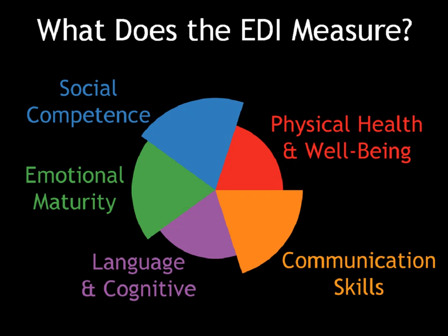What does the EDI measure? It has 103 items on it, formed as a kind of extended report card that kindergarten teachers fill out in February of the school year. It provides information on children's physical health and well-being, their social skills, their way that they relate to peers in an emotional way, their language and cognitive development — which is traditional readiness for school — and their communication skills: can they understand and be understood at the level of instruction of the school?